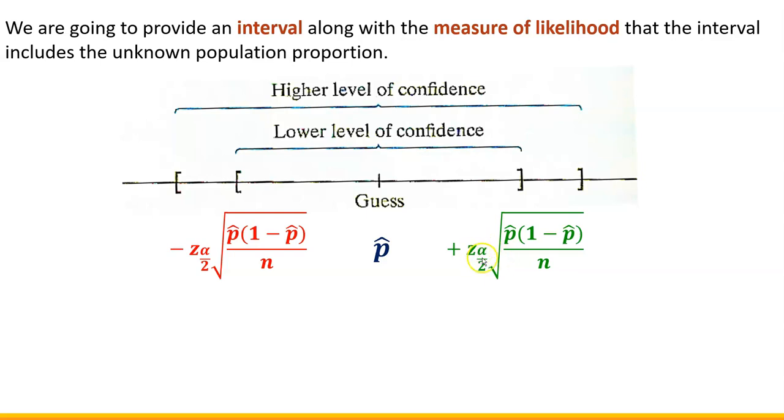Now the letter alpha that we can see here is within the subscript of z. That will represent the level of confidence. We're going to talk about that in a minute. And then you might be able to recognize this expression. It represents the standard error or standard deviation of the sampling distribution of the sample proportion. With the only difference is that here we're using sample proportion instead of population proportion, since we don't know it.